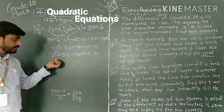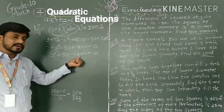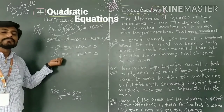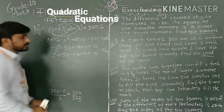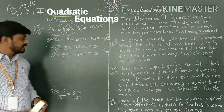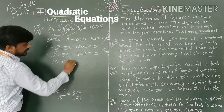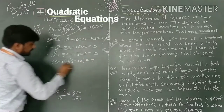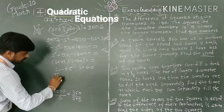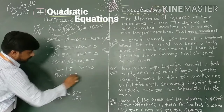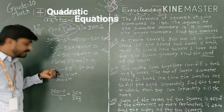By the factorization method, splitting the middle term: product is 1800 and sum is 5. Taking 45 and 40: (s + 45)(s - 40) = 0. So s = -45 or s = 40. s = -45 is not possible because speed can never be negative.